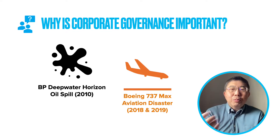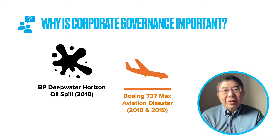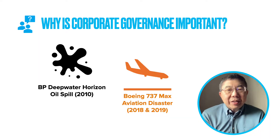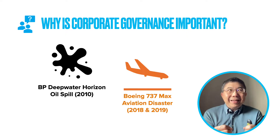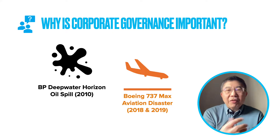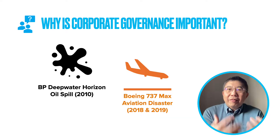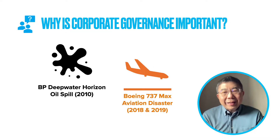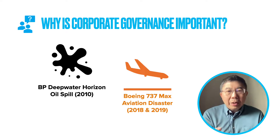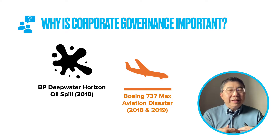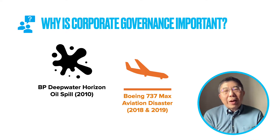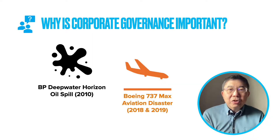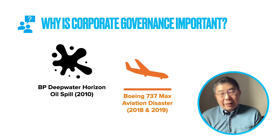Examples such as the British Petroleum oil spill more than 10 years ago, and the Boeing 737 disasters all have a significant impact on our lives. There are also a lot of other corporate scandals — the most famous one is Enron. This has shown that when companies fail, it really has a negative impact on our lives. There is therefore a need to control and ensure that companies are governed in a more effective and efficient manner — hence the need to look at corporate governance, and hence governments around the world have got rules and regulations in place to ensure that companies are properly governed.